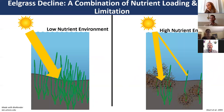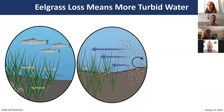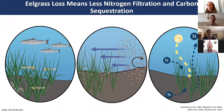This can lead to eelgrass die-off. Eelgrass decline is problematic because it means a loss of ecosystem services—specifically habitat loss, as juvenile fish use eelgrass beds for nurseries, hurting commercial and sustenance fishing. Additionally, loss of eelgrass results in higher turbidity, since eelgrass attenuates waves and promotes sedimentation, and removes essential nitrogen filtration and carbon sequestration services.